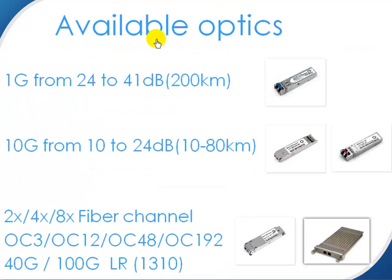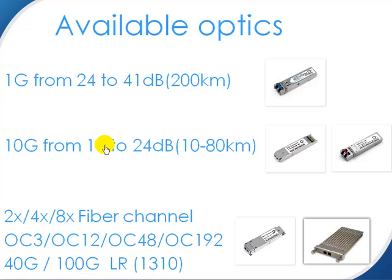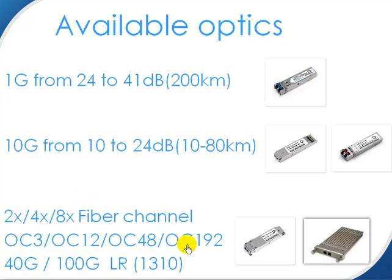Different CWDM optics are available. The 1 gig is starting from 24 dB up to 41 dB, and 41 dB is around 200 kilometers. The 10 gig is starting from 10 dB, which is around 10 kilometers, up to 24 dB, which is 80 kilometers. CWDM optics can also be made for fiber channel — 2x, 4x, or 8x fiber channel — or OC3, OC12, OC48, OC192. And also for 40 gig or 100 gig, which is working in the 1310 range.